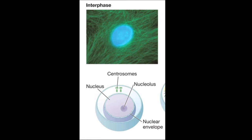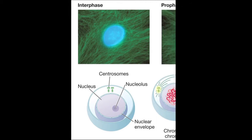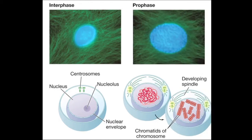Interphase is the period between successive nuclear divisions in the cell cycle, during which the chromosomes are diffuse and the nuclear envelope is intact. Prophase is the first stage of nuclear division, during which chromosomes condense from diffuse, thread-like material to discrete, compact bodies.